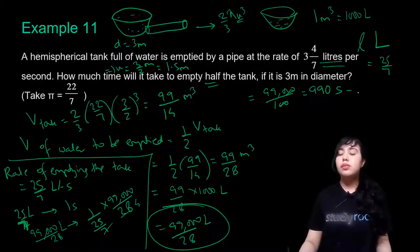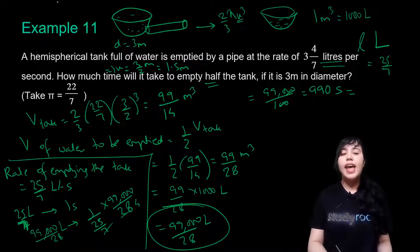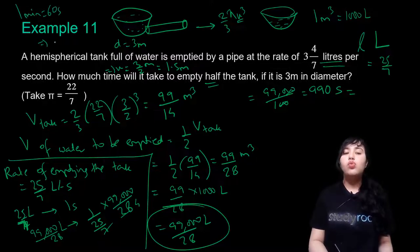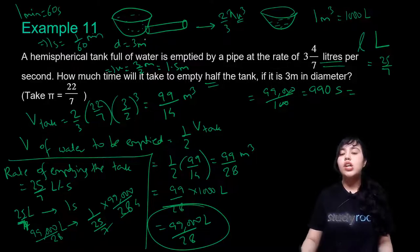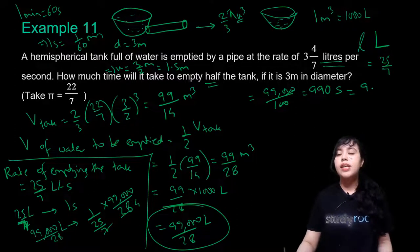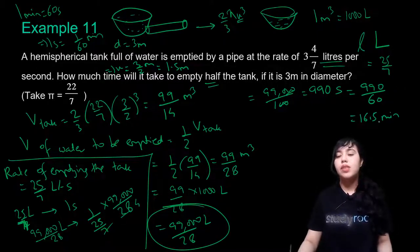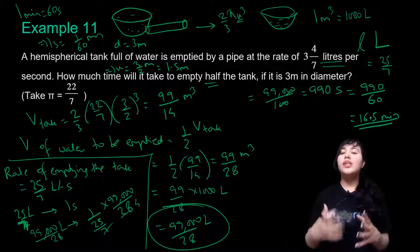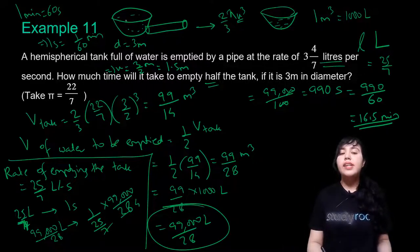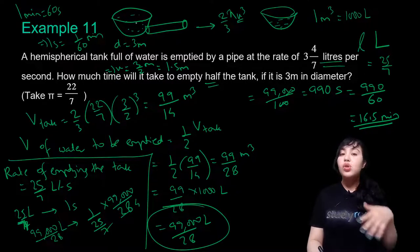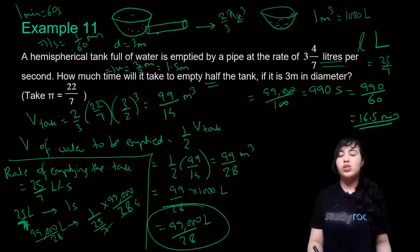Converting seconds to minutes: 990 ÷ 60 = 16.5 minutes. So 16.5 minutes is required to half-empty this hemispherical tank using the pipe.